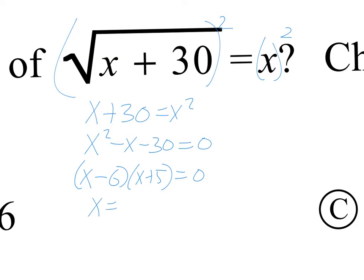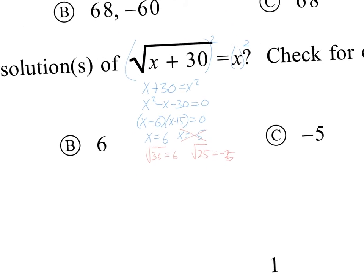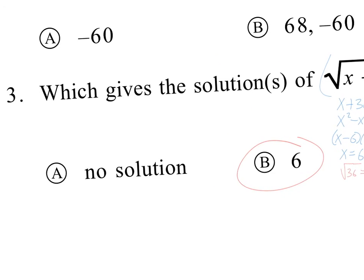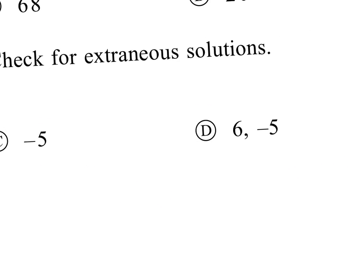When I solve that, I get x is equal to 6 and x is equal to negative 5. I've got to plug both of those back in to see if this is extraneous or not. If I plug 6 in, I get the square root of 36 is equal to 6, which is true. If I plug negative 5 in, I get the square root of 25 is equal to negative 5, which is not true. So x equals negative 5 is an extraneous solution. That means that the answer to this is only 6.